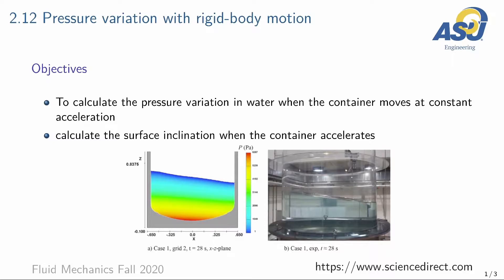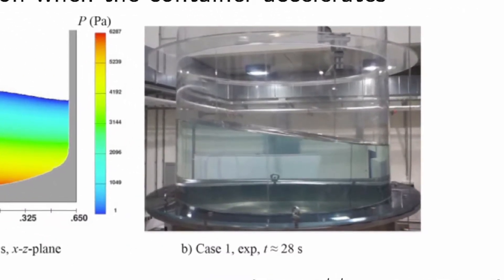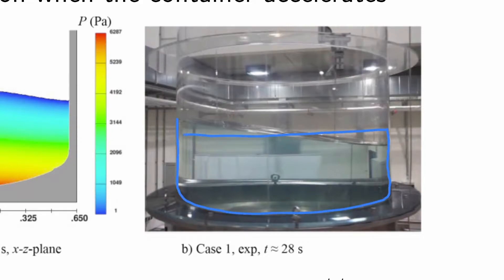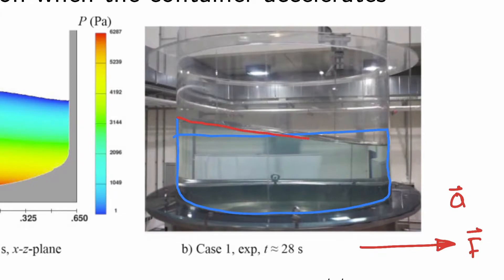This is section 2.12: pressure variation with rigid body motion. Consider the case in which we have a container filled with water or any other fluid, where the original level of the fluid is horizontal. When we apply a force on the container to the right, it causes an acceleration, and as a result the fluid deforms as we can see in the figure.